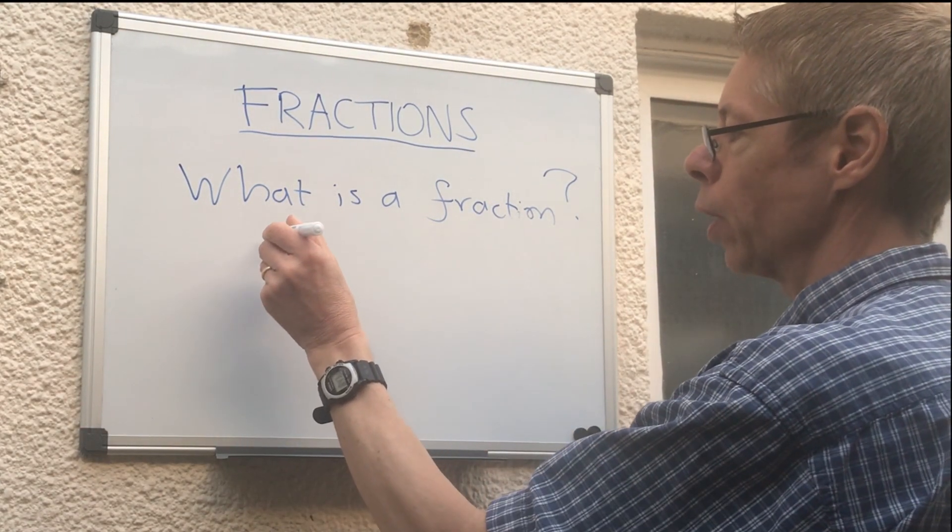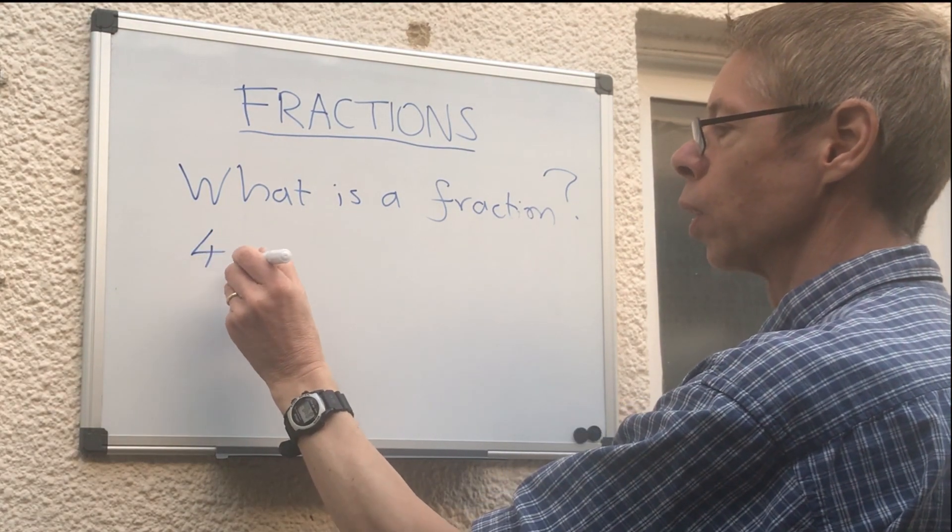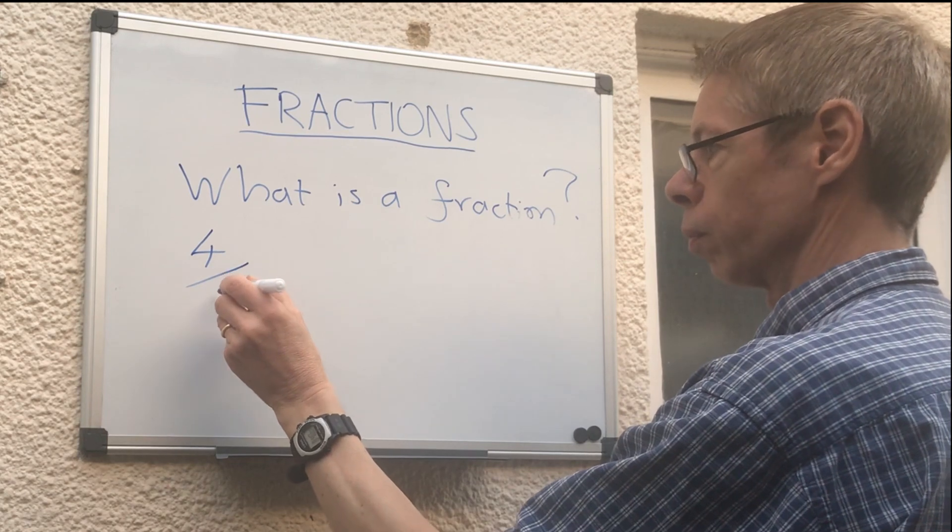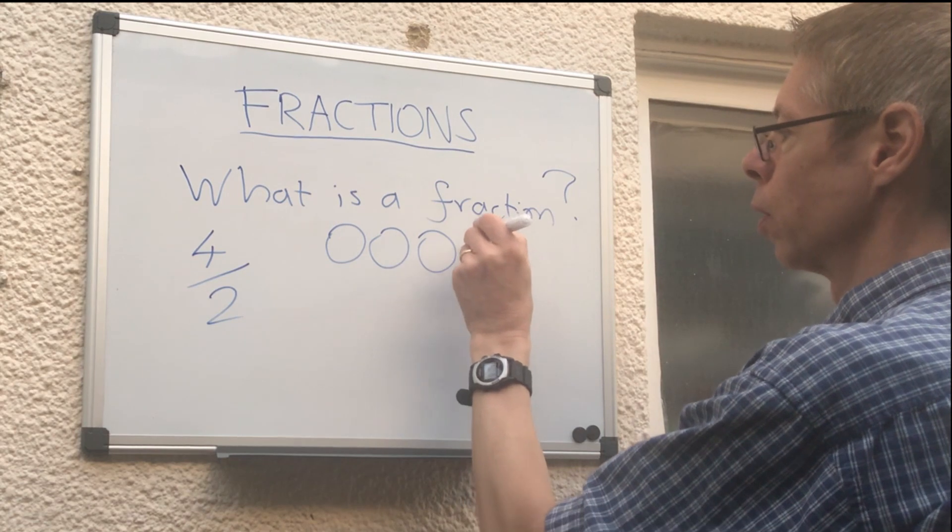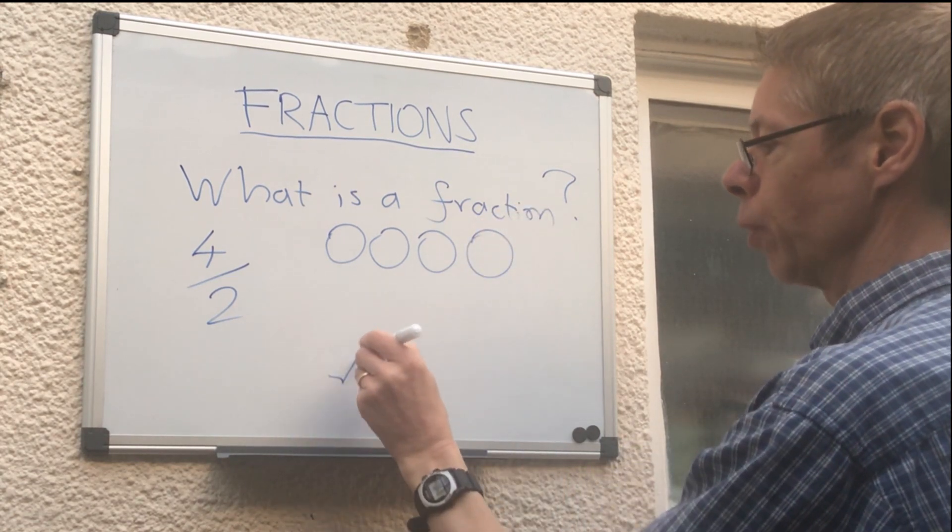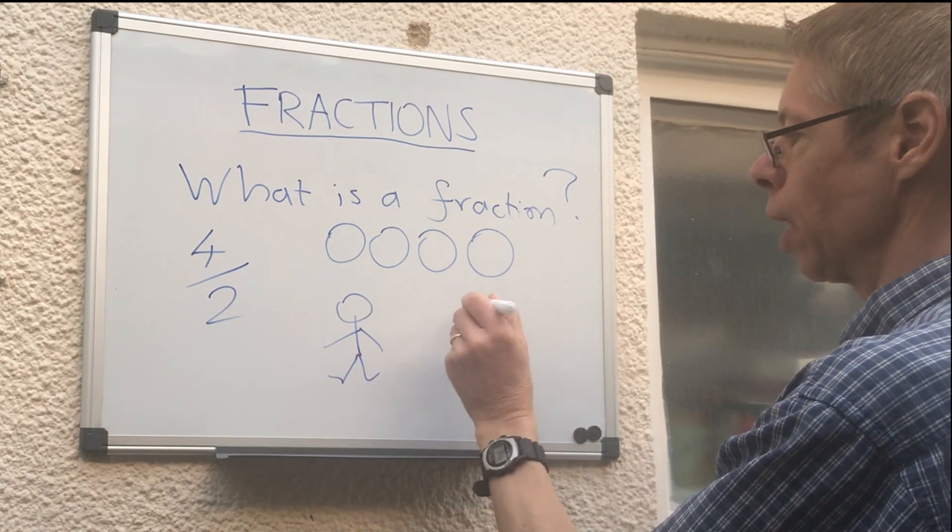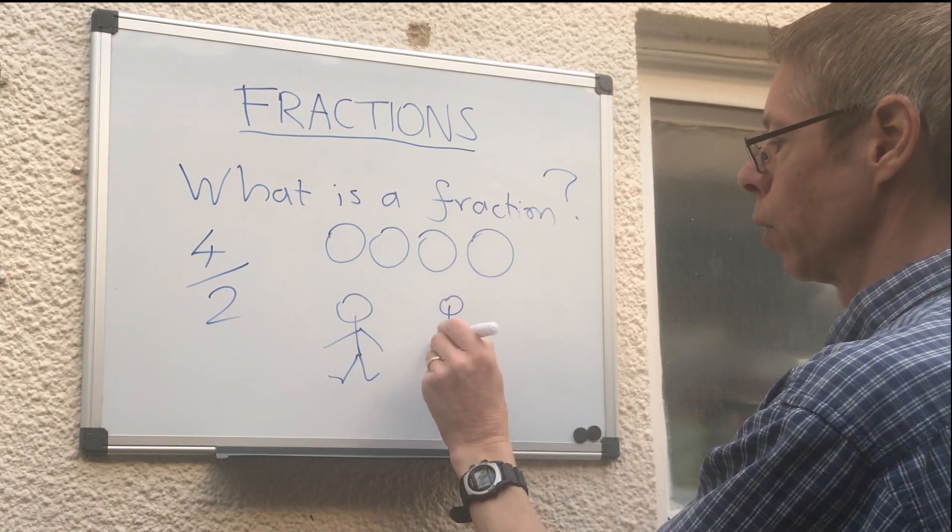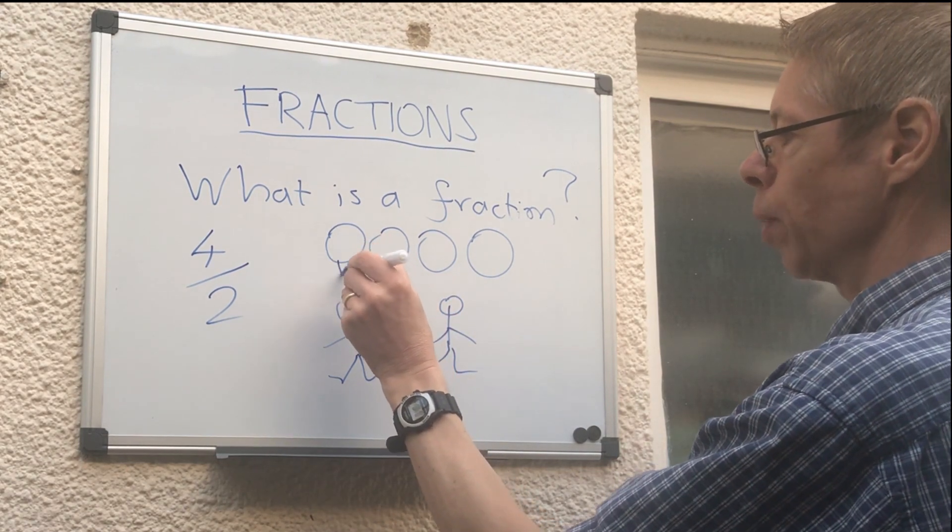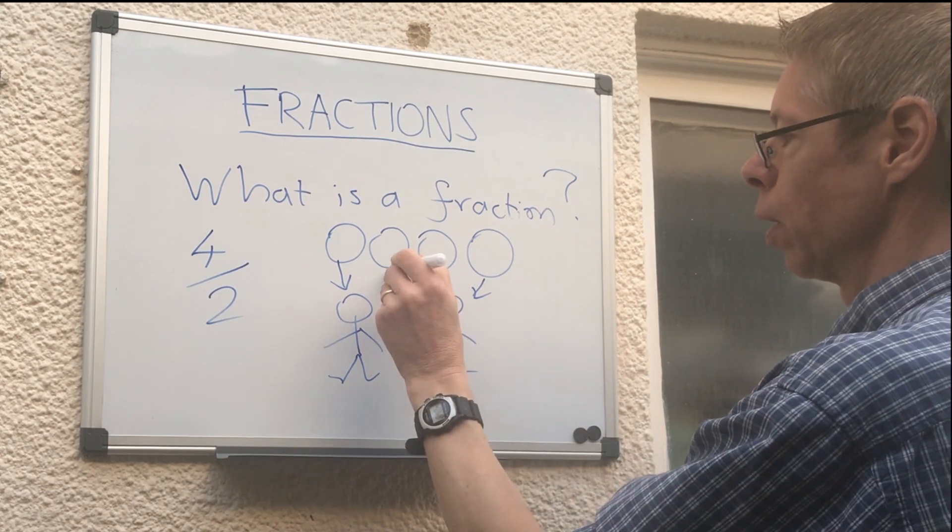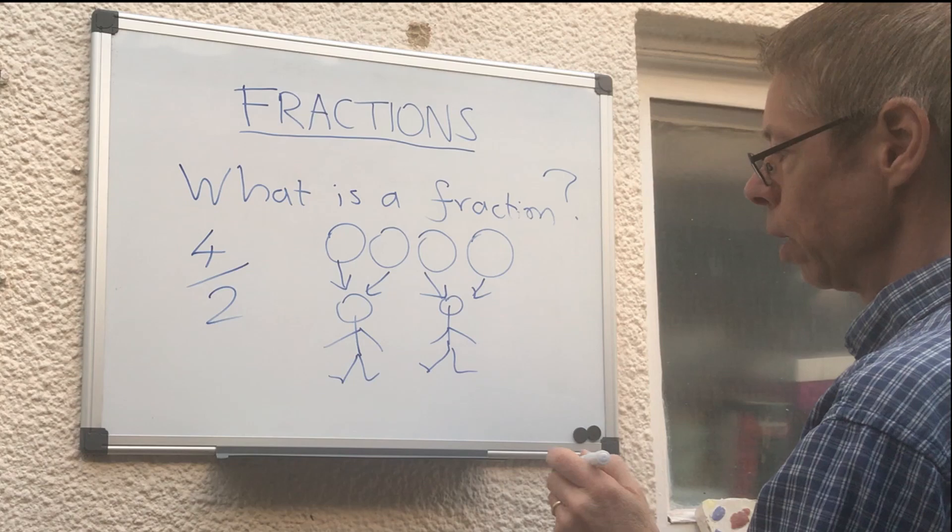So you could have, if you had four over two, you could have four biscuits—again the expert drawing is going to come into play here. So that means four biscuits shared by two people. So if we give one biscuit to that person, you've got to give one biscuit to that person, one biscuit to that person, one biscuit to that person, so each person has got two biscuits.